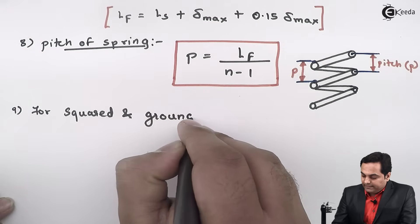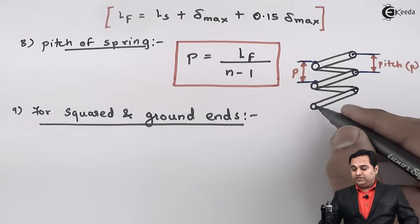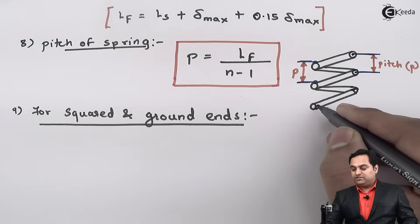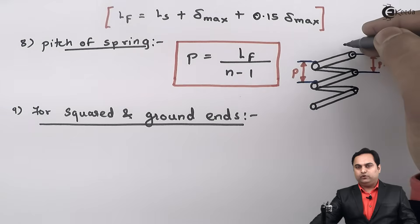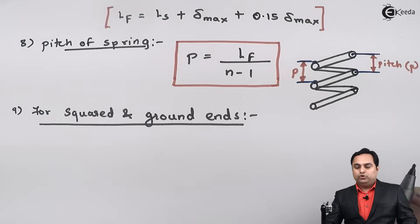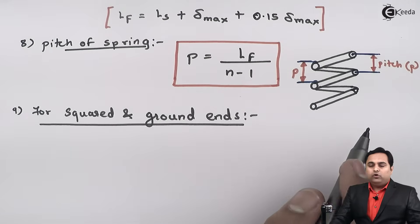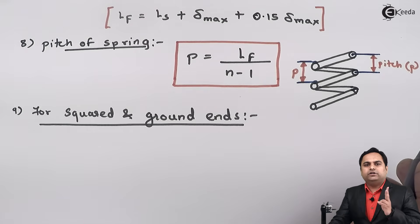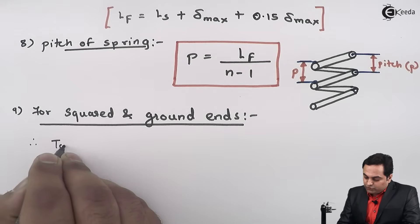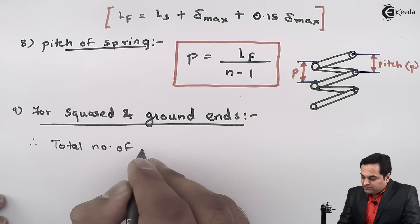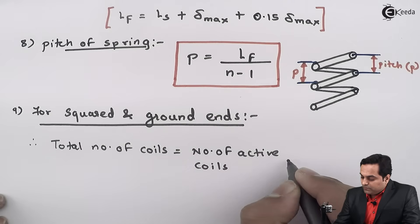Next, after pitch, is squared and ground ends. Springs are made up of wires with a circular cross-section, so when placing the spring on a surface there are chances it can slip under load. To avoid slipping, we make the ends squared and grind them. We leave two turns for squared and ground ends — one at the bottom and one at the top — for seating.